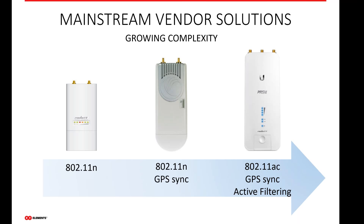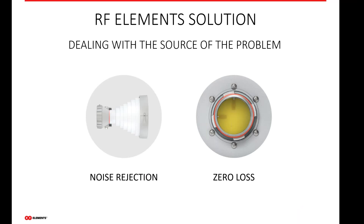We tried to focus on the root of the problem with noise, and I will first explain that, then speak more about techniques to increase throughput. Our technology is about what you will see when you come to our website. Our solution is about noise rejection and virtual zero loss. If we translate those two things into commercial product and feature names, we basically speak about horn antennas and the twist port connector.